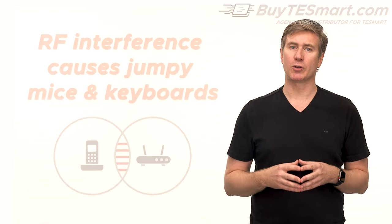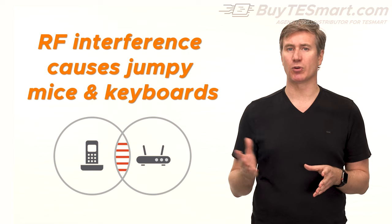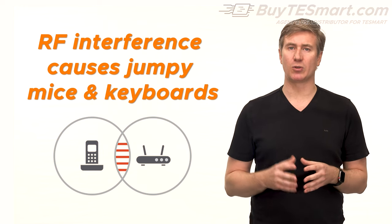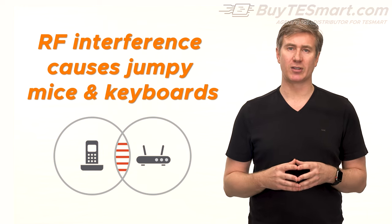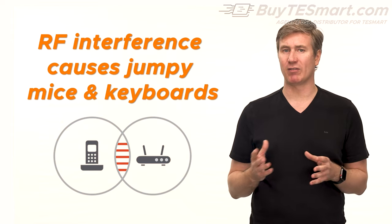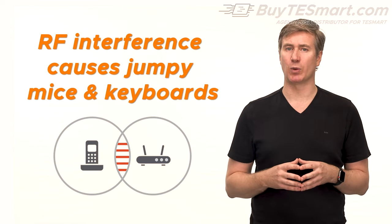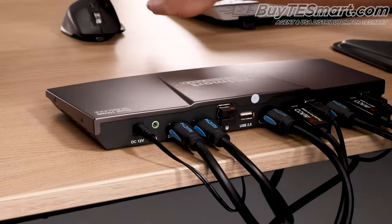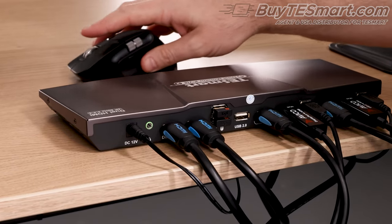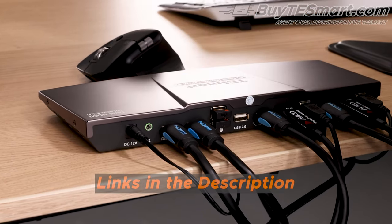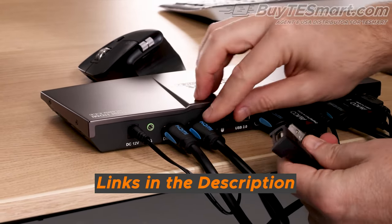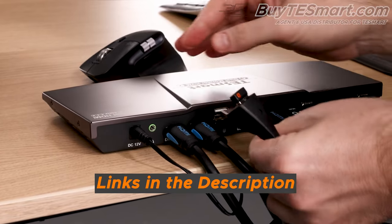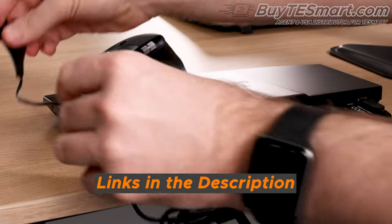Quite often, customers will note that their wireless mouse or keyboard is jumpy or erratic. This is almost always due to RF interference and is a common problem in non-KVM environments as well. You can test this quickly by using the mouse up close to the receiver, and if it works normally, then we recommend just picking up a cheap little USB extender to get the receiver out from behind the KVM and closer to your mouse and keyboard.